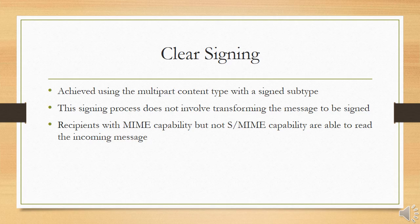Clear signing is achieved using the multipart content type with a signed subtype. This signing process does not involve transforming the message to be signed, so the message is sent in the clear, allowing recipients without S/MIME capability to read the incoming message. A multipart signed message has two parts. The first part can be any MIME type but must be prepared so it will not be altered during transfer from source to destination. If the first part is not 7-bit, it needs to be encoded using base64 or quoted-printable.